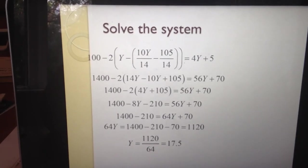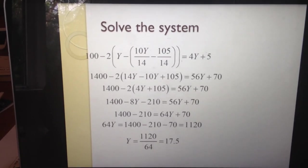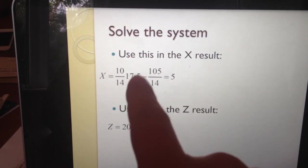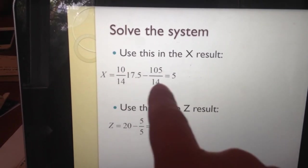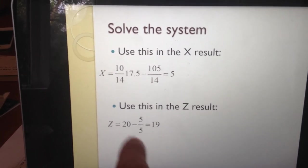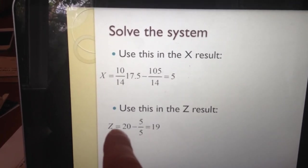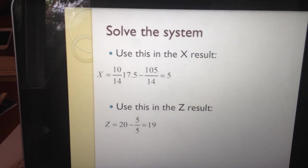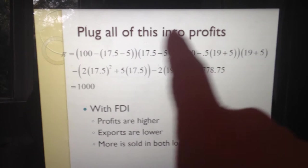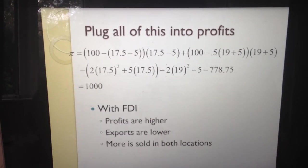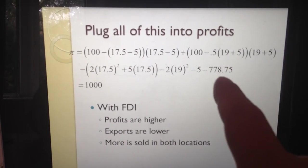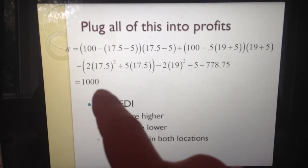Dividing by 64, the output produced in Ireland is y = 17.5. Plugging that back into the x equation gives x = 5 units exported. Now knowing x = 5, z (production in the UK) equals 19 units. Plugging all of that back into the profit equation and calculating, profits equal 1000 — which is why I aimed for that number, so you feel confident when you get the right answer.